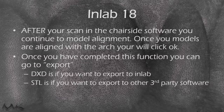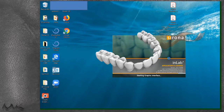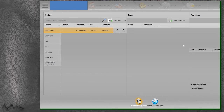Now we're going to go to In-Lab 18. After we scan in the chair-side software and continue to our model alignment, we click OK — that saves the 3D global positioning data in DXD or STL format. It's important to know what type of file we're exporting. If we want to use DXD, we have to export to the in-lab software. If we don't mind using an STL — for something removable, orthodontics, or just creating a model — then an STL is probably fine.